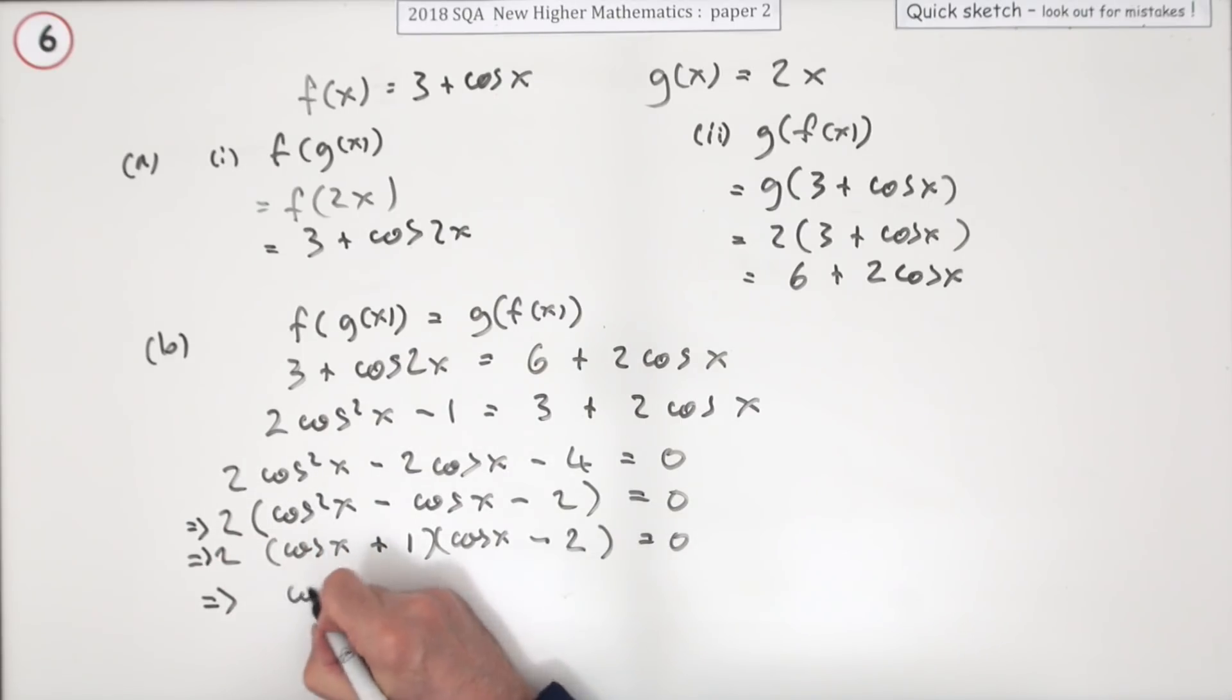If that is equal to zero, then cos x is negative one. If that is equal to zero, then cos x is two.